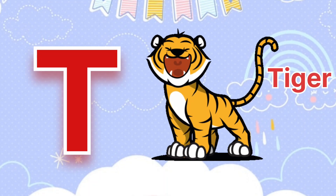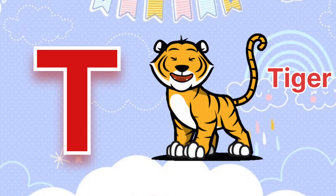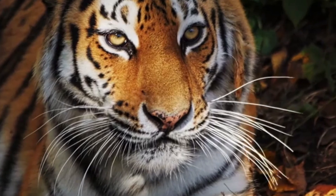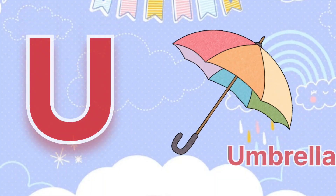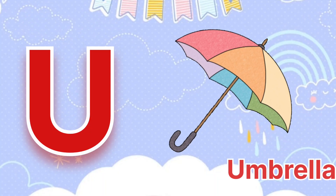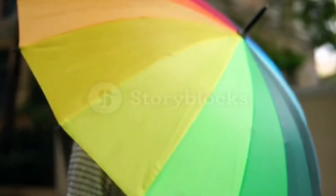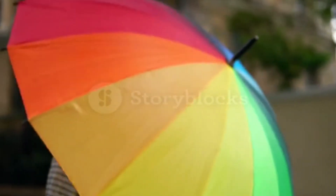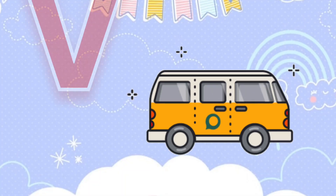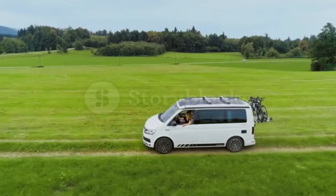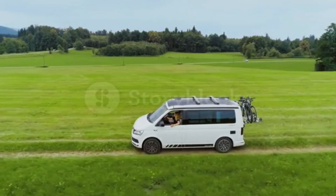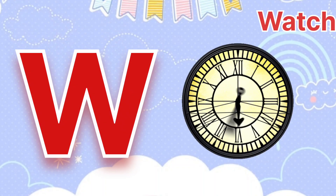T is for Tiger. T is for Tiger. U is for Umbrella. U is for Umbrella. V is for Van. V is for Van.